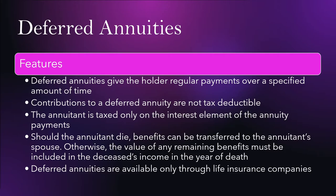Deferred annuities give the holder regular payments over a specified amount of time. Contributions to a deferred annuity are not tax-deductible, and the annuitant is taxed only on the interest element of the annuity payments. Should the annuitant die, benefits can be transferred to the annuitant's spouse; otherwise the value of any remaining benefits must be included in the deceased's income in the year of death. Deferred annuities are available only through life insurance companies and are not widely used nowadays given low interest rates.